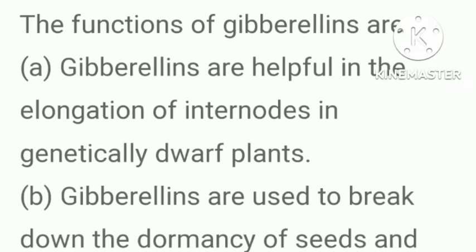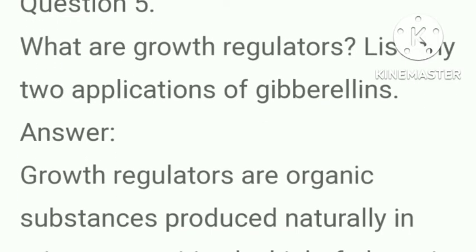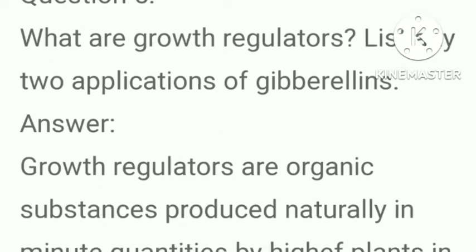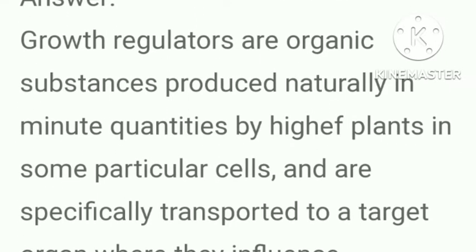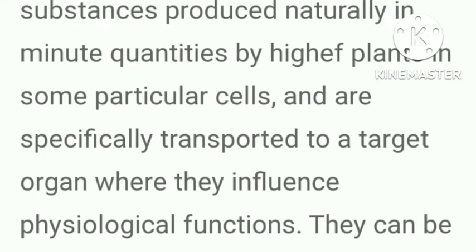Explain any two functions of gibberellins. Answer: Gibberellins are helpful in the elongation of internodes in genetically dwarf plants. Gibberellins are used to break down the dormancy of seeds and buds. What are growth regulators? Answer: Growth regulators are organic substances produced naturally in minute quantities by higher plants in particular cells.